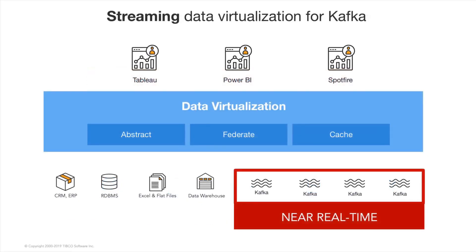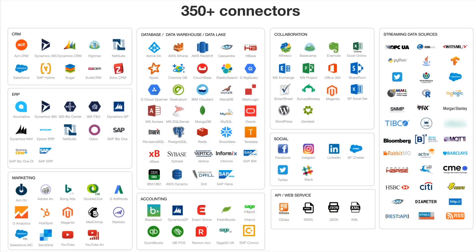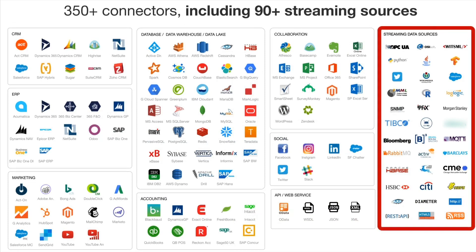Now, for the first time, TIBCO makes Kafka a first-class citizen in data virtualization — you just connect it and go. And you can connect over 90 other real-time sources like Bloomberg, IoT data from OSIsoft PI or OPC UA, and other open-source streaming data from things like MQTT for IoT data.